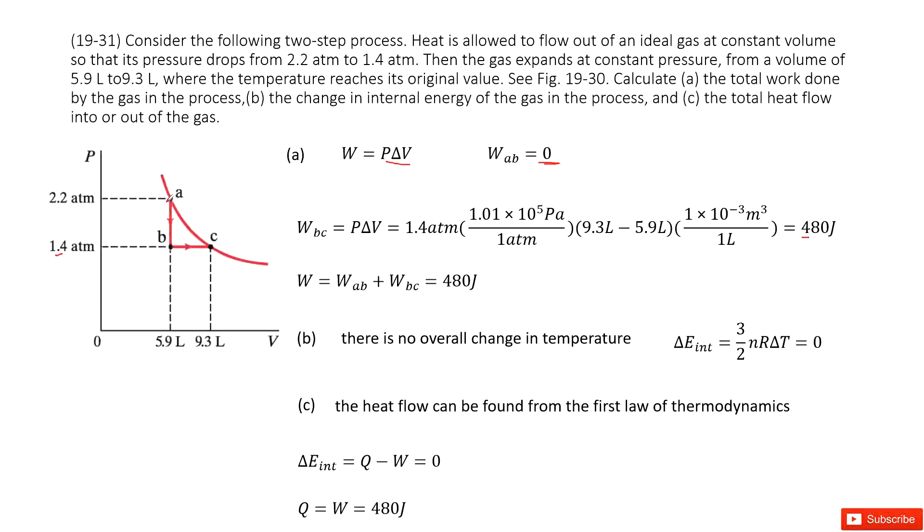Now the total work done in this process A, B, C just equals work done by AB plus work done by BC. AB is zero, BC is 480J, so we get the final answer, 480 joules.